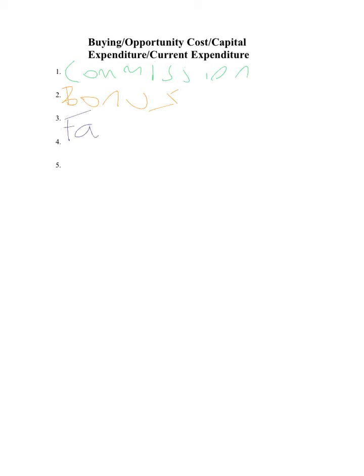The next one is false economies — this is when something will appear cheaper now, but in the long run it will actually turn out to be more expensive. Say you see a bag for 5 euro and another for 10 euro, and you buy the 5 euro one. But it's of poorer quality and that bag breaks, so you have to replace it again and again. You would have been better off buying the sturdier 10 euro bag. We call that a false economy — when something appears cheaper now but in the long run turns out to be more expensive.